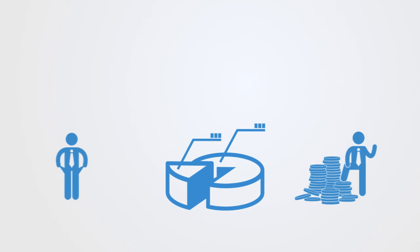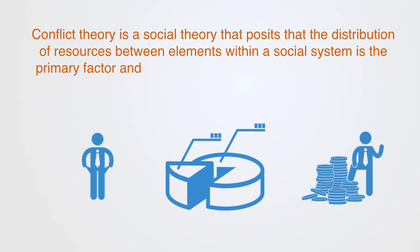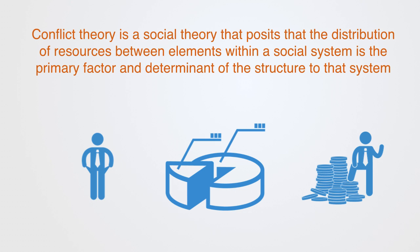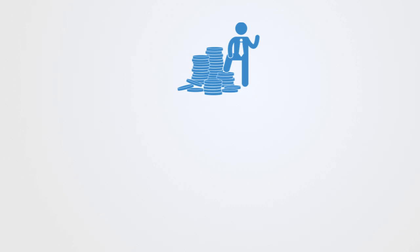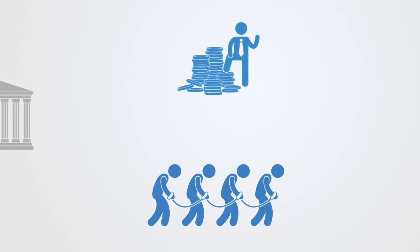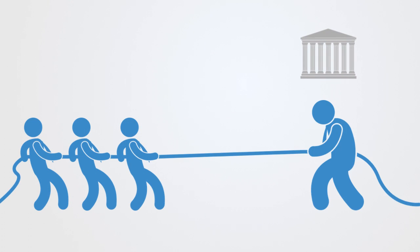In contrast to functionalism, conflict theory is a social theory that posits that the distribution of resources between elements within a social system is the primary factor and determinant of the structure to that system. It is focused on the unequal distribution of resources, arguing that individuals and groups within society have access to different amounts of material and non-material resources. Thus, the social structure that emerges is seen to be essentially a mechanism for more powerful groups to use their resources in order to exploit groups with less power. According to the conflict perspective, society is made up of individuals competing for limited resources, and this competition over scarce resources is at the heart of all social relations.